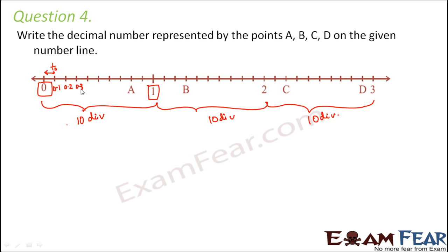This would be 0.2, this would be 0.3, 0.4, 0.5, 6, 7 and 8. So what is A? A is 0.8.